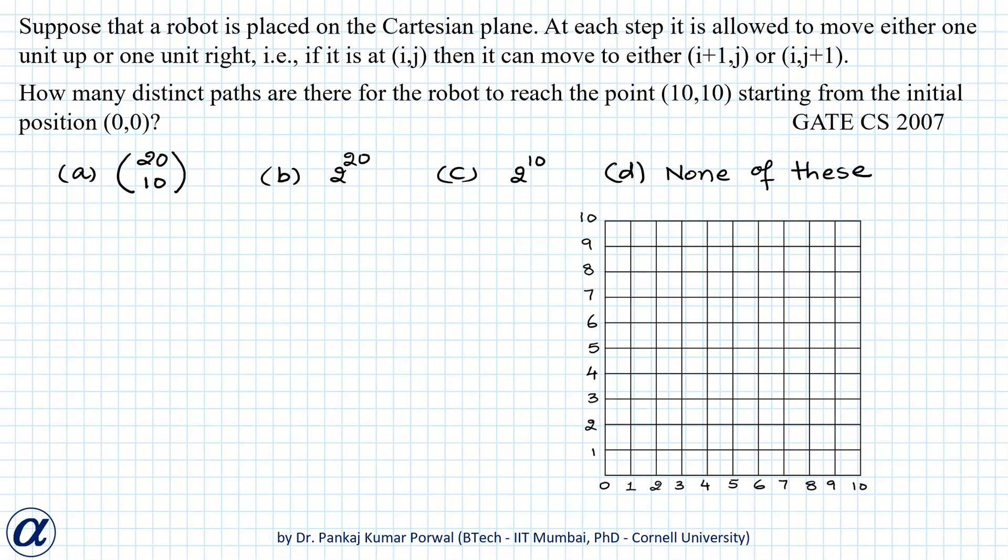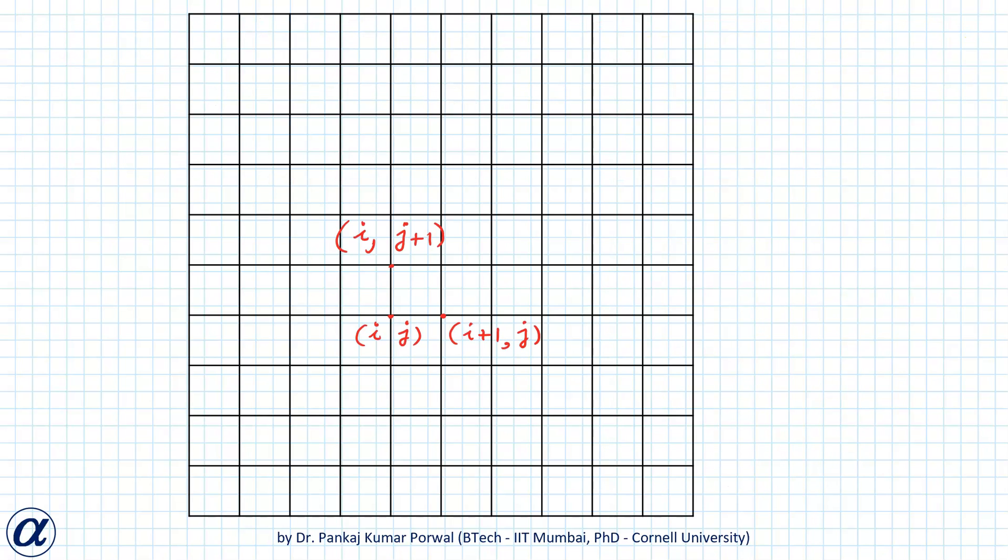In this question, we are given that a robot is placed on the Cartesian plane. At each step it is allowed to move either one unit up or one unit right. That is, if the robot is at point (i,j) then it can go one unit right to the point (i+1,j) or one unit up to the point (i,j+1).